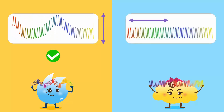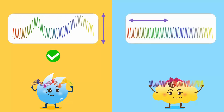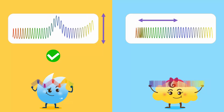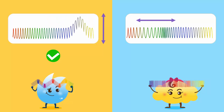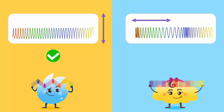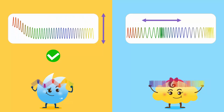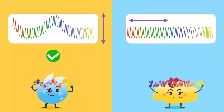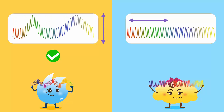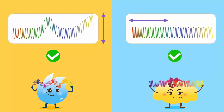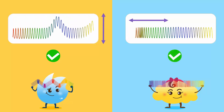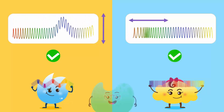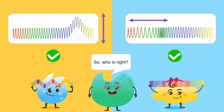Bubbles disagreed. Instead of up and down, she moved her spring back and forth. She claimed that stretching and compressing the spring was the right way to make a wave. So, who's right?